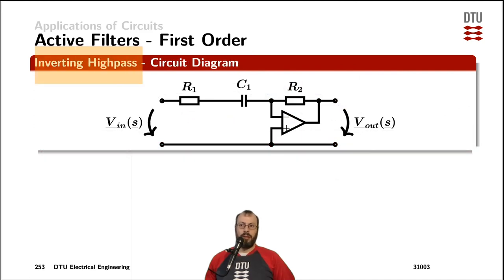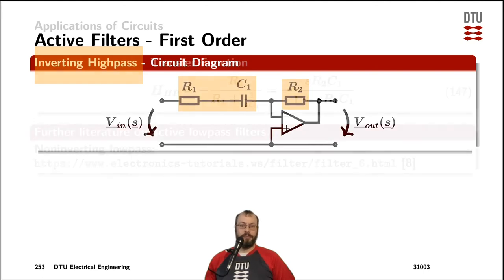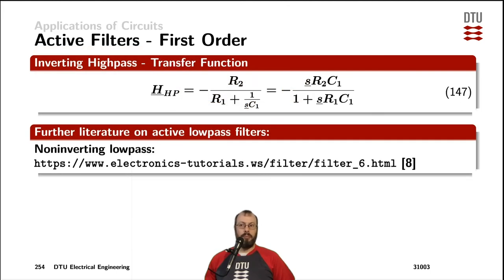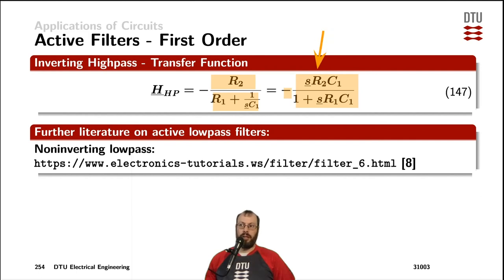For an inverting high-pass filter, we replace Z1 with the series connection of a resistor and a capacitor, while the feedback impedance is a resistor R2 only. Dividing the impedance of R2 by the impedance of the series connection of R1 and the capacitor gives the characteristic transfer function of a high pass, with a minus sign since it is inverting. The gain at frequencies approaching infinity is set by the ratio R2 divided by R1. A non-inverting high-pass version is also described on the referenced homepage.